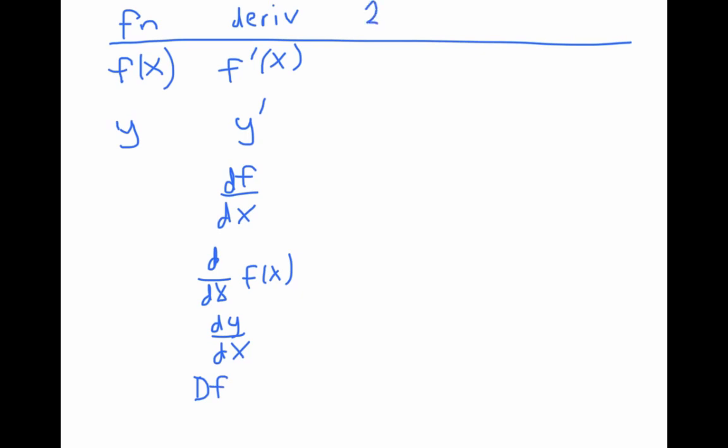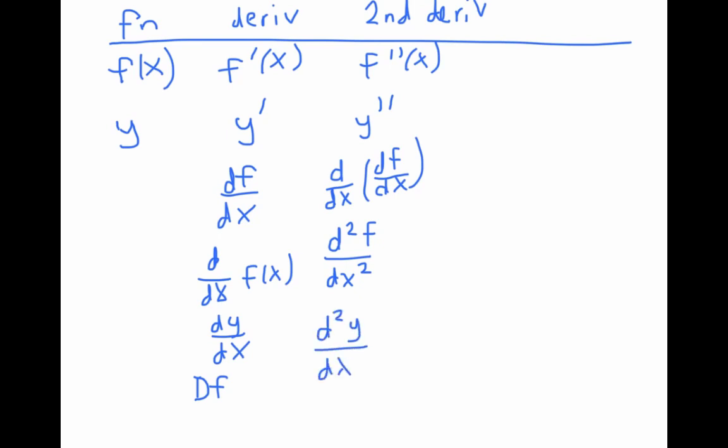If we're looking at the second derivative, we've seen the notation f double prime of x, y double prime is a similar notation. Or we might write d dx of df dx. And the shorthand for that is d squared f dx squared. Similarly, we might write d squared y dx squared, using y in the place of f for the function.